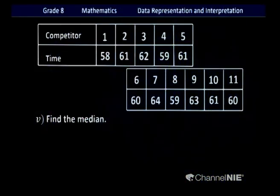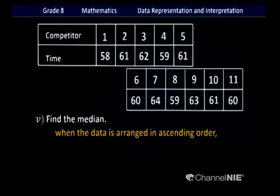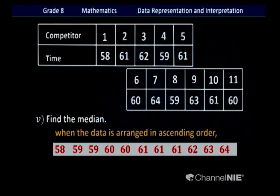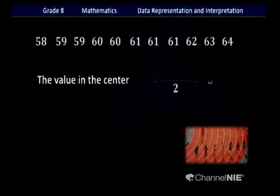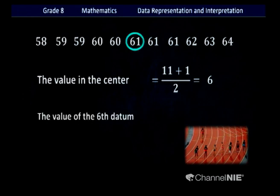Find the median of the set of data. There are 11 competitors — an odd number of data. First rearrange in ascending order, then add 1 to the number of data and divide by 2: 11 + 1 = 12, divided by 2 = 6. The sixth value is 61. Therefore 61 is the median of this collection.